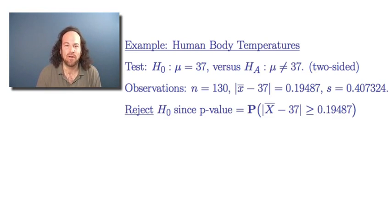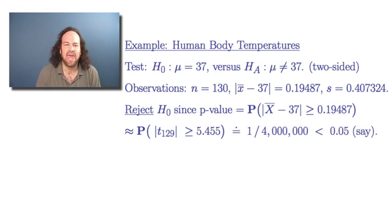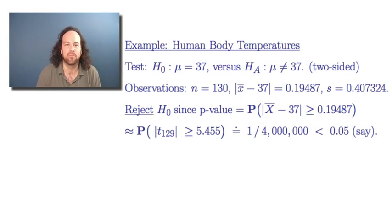We decided to reject the null hypothesis that the true normal body temperature was 37 degrees. We rejected it because we computed a p-value: what is the probability that the observed value of x-bar would differ from the hypothesized value of 37 degrees by as much as it did in our observations? We converted it to something involving a t-distribution with 129 degrees of freedom, and it worked out to be the probability that that is bigger than 5.455 — extremely small, like one chance in 4 million — much less than a typical significance level of 0.05. So we rejected that: the normal human body temperature is not equal to 37 degrees Celsius.